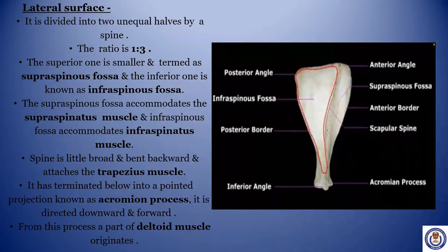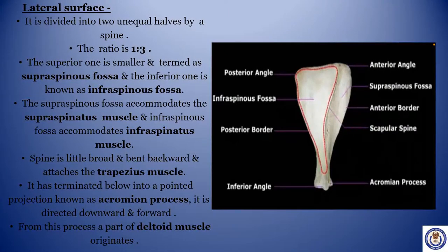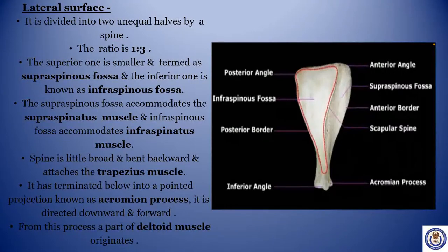Lateral surface. It is divided into two unequal halves by a spine. The ratio is 1 to 3 in case of ox. The superior one is small and termed the supraspinous fossa, and the inferior one is known as the infraspinous fossa. The supraspinous fossa accommodates the supraspinatus muscle and the infraspinous fossa accommodates the infraspinatus muscle. The spine is little broad and bent backward, attaching to the trapezius muscle. The spine terminates below into a pointed projection known as the acromion process, directed downward and forward, from which a part of the deltoid muscle originates.